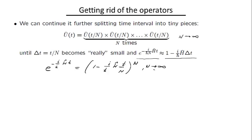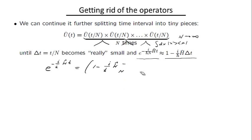Instead of writing the complicated nonlinear exponential of an operator, we write it as a product of functions that are linear in the Hamiltonian. As we do so, in between each of these terms in the product, I'm going to insert the resolution of identity: the integral dx |x⟩⟨x|. Since I now have many insertions, I label them differently: x_1, x_2, x_3, corresponding to the intermediate coordinates in my trajectories.